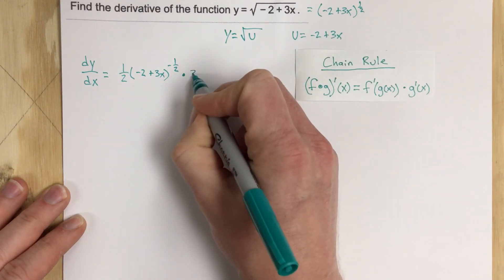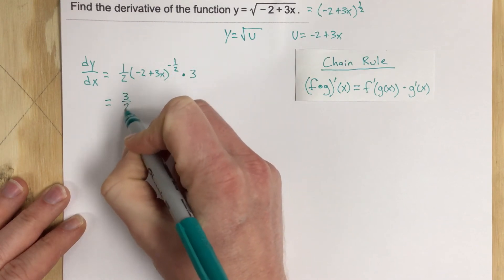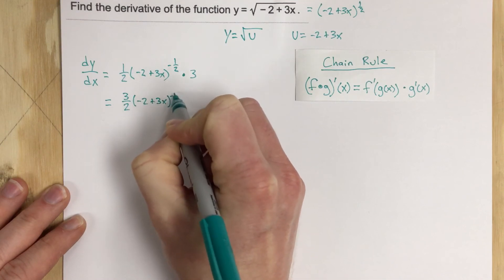So we take it times 3 and we end up with 3 halves negative 2 plus 3x to the negative half.